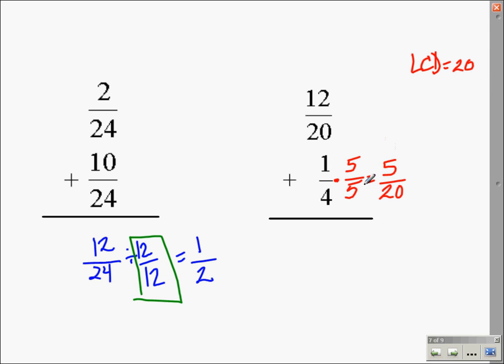Now that we have the same denominator, we can go ahead and add. So I have the denominator of 20, and I have 12 plus 5, which is 17. This is already simplified because I chose the least common denominator.